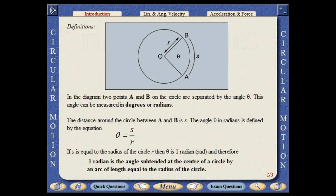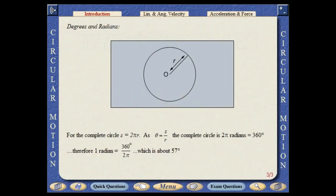One radian is therefore the angle subtended at the center of a circle by an arc of length equal to the radius of the circle. A complete circle is two pi radians. One radian is therefore about 57 degrees.